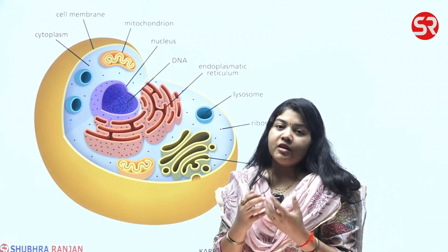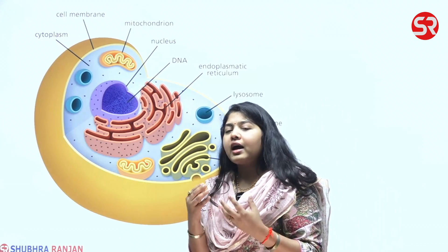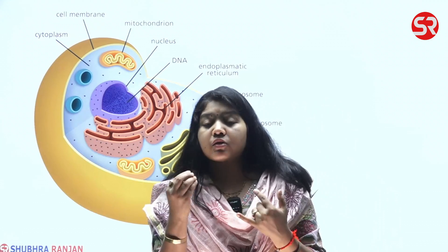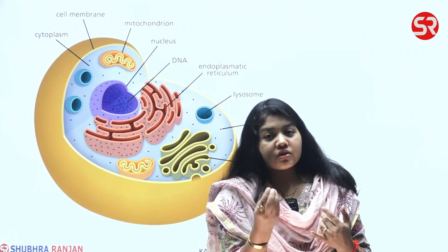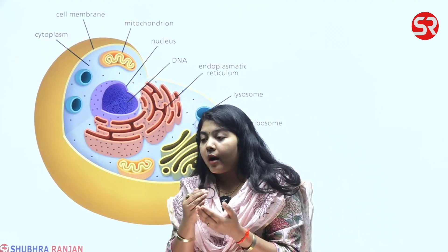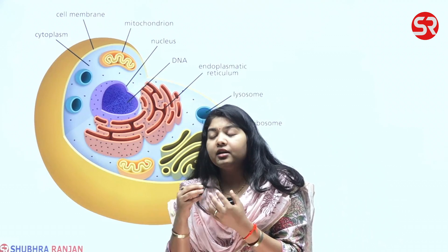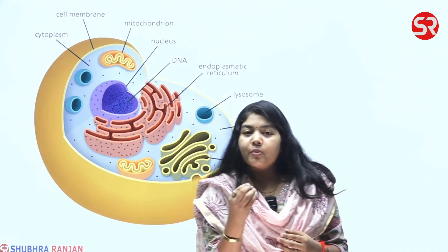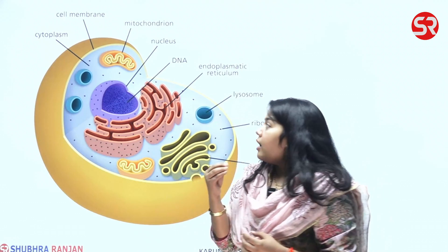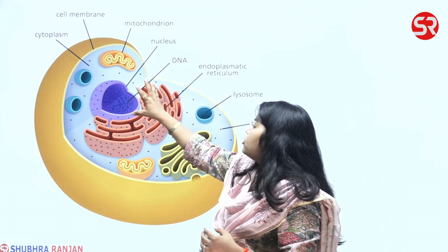Even if a cell does not have elaborate structures, as long as it has a cell membrane, a genetic material — whether RNA or DNA — and a cytoplasm, it is considered a functioning cell.